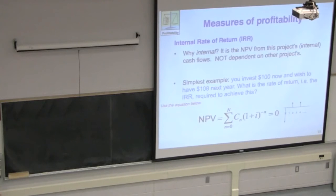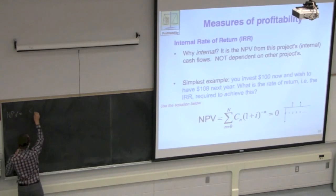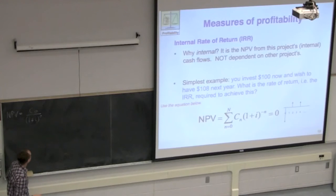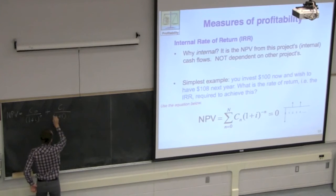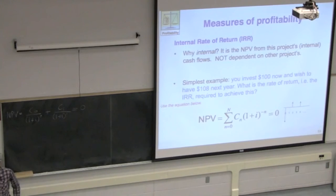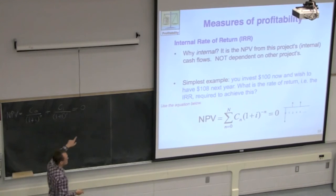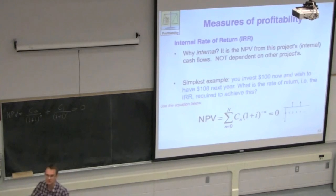Let's look at how to show this. NPV is this formula — let's expand that summation. In the first period I have a cash flow of C0 divided by one plus i raised to the power zero. I wish to have $108 next year, so C1 divided by one plus i to the power one. That's my net present value — I don't need a third period, so N equals two. I set that equal to zero. We're solving for i so that NPV equals zero. Our goal is to find that interest rate i so that NPV equals zero.